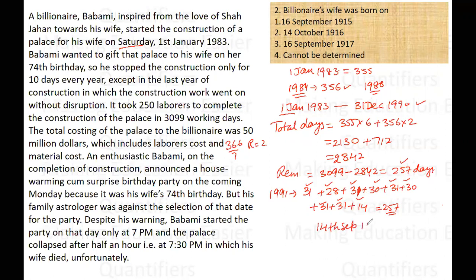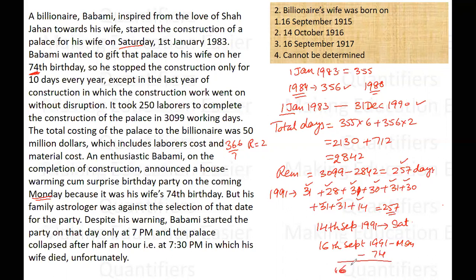14th September 1991 was Saturday. The question says on the completion of construction, he announced a housewarming surprise birthday party on the coming Monday. The coming Monday after Saturday would be 16th September 1991. On this date, the billionaire's wife was becoming 74 years old. So subtracting 74 years, she was born on 16th September 1917.